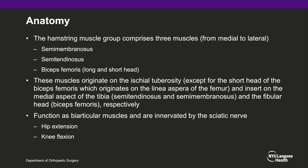The hamstring muscle group comprises three muscles: the semimembranosus, the semitendinosus, and the biceps femoris, which includes the long and the short head. The semitendinosus, semimembranosus, and long head of the biceps all originate on the ischial tuberosity.